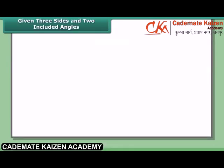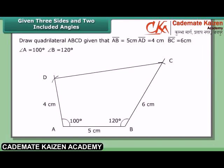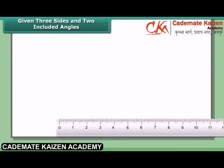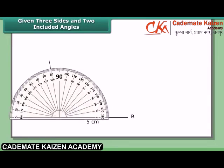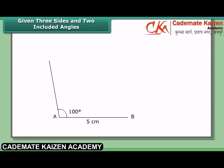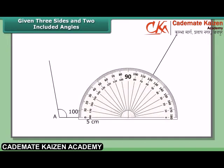Given three sides and two included angles, draw quadrilateral ABCD where AB = 5 cm, AD = 4 cm, BC = 6 cm, angle A = 100°, and angle B = 120°. Steps: 1. Draw AB = 5 cm. 2. At A, draw an angle of 100°, and at B, draw an angle of 120°.